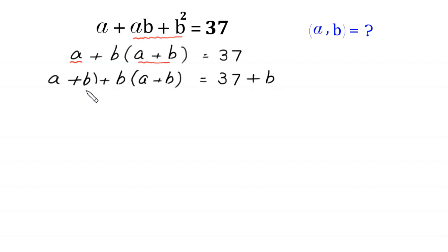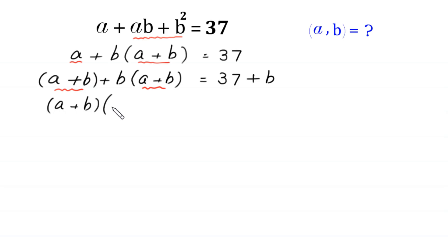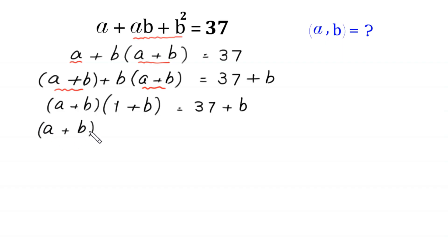Now here we have a plus b and here we have only a. To make this a the same as a plus b, we add b to both sides: a plus b(a plus b) plus b is equal to 37 plus b.